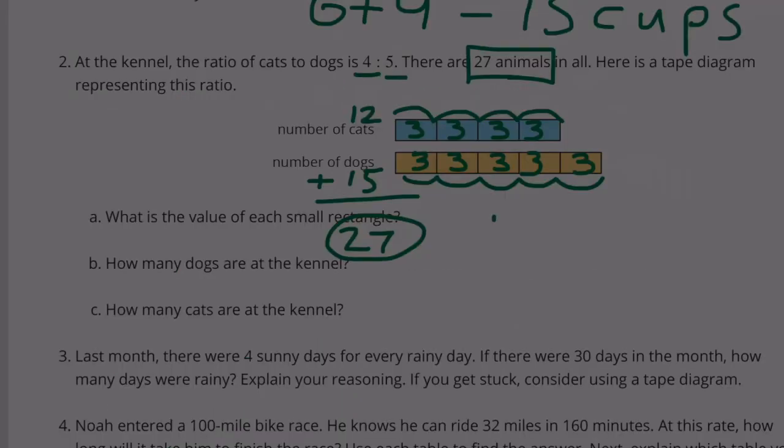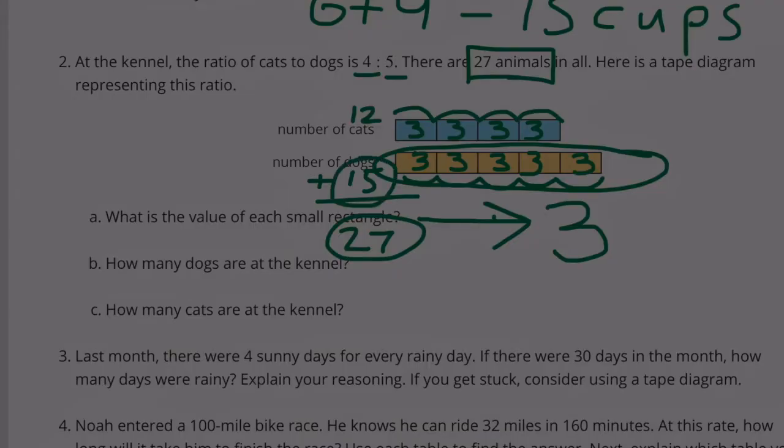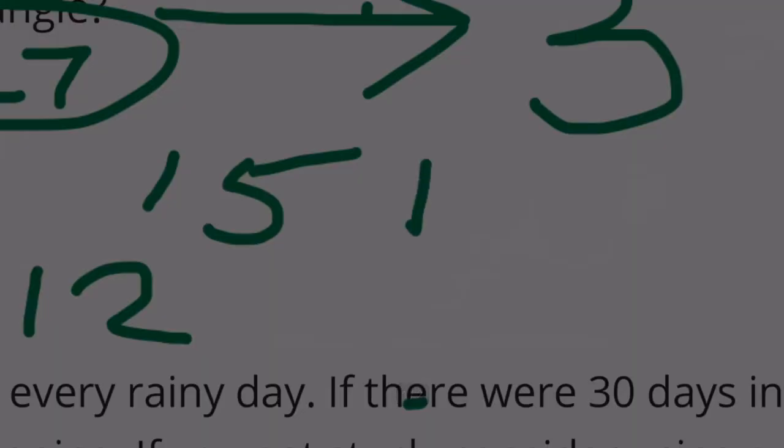27. What is the value of each small rectangle? The value for each small rectangle is 3. How many dogs are at the kennel? This represents the number of dogs at the kennel. There are 15 dogs. How many cats are at the kennel? This represents the number of cats. There are 12 cats.